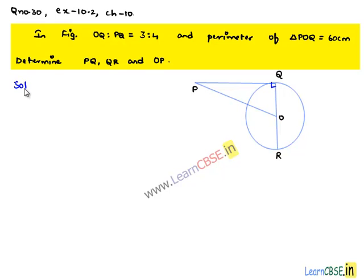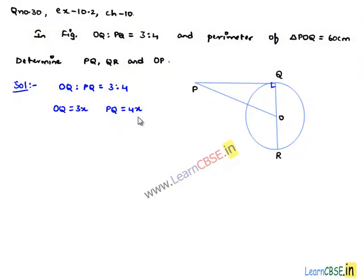Coming to the solution, from the figure the ratio of OQ to PQ is equal to 3 to 4. So let us assume that OQ equals 3x and PQ equals 4x. Also, perimeter of triangle POQ is given as 60 centimeters.